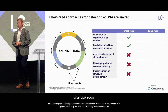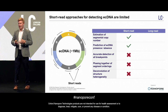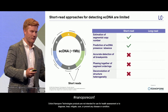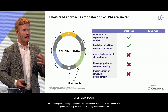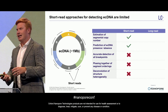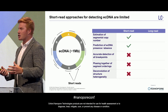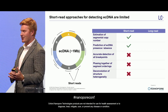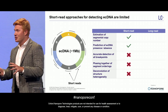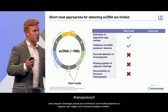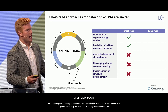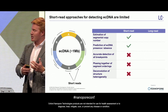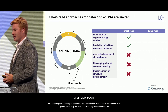Typically, what's been done to study ECDNA is to take short-read whole-genome sequencing data, align it to a reference genome, and identify focal amplifications. This has done a pretty good job over the past 10 years or so at detecting the presence or absence of ECDNA, but it doesn't do such a great job at resolving the full structural heterogeneity and epigenetic states of ECDNA, which is especially important for studying its biology as well as clinical relevance.